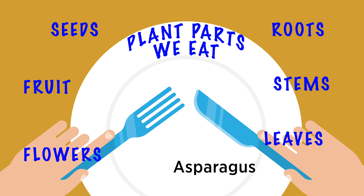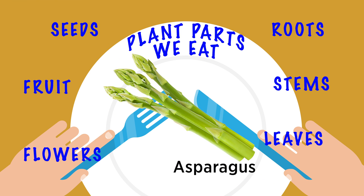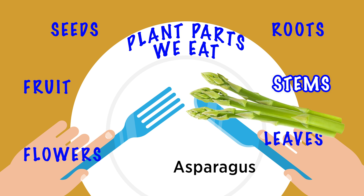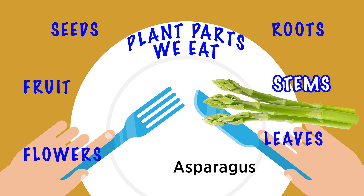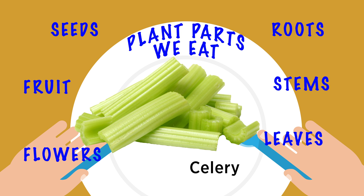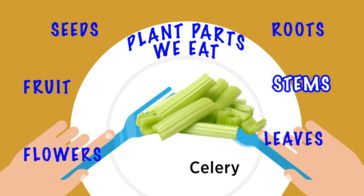Asparagus — when we eat asparagus, what do you think we're eating? We're eating the stems. Here's some celery — it's already been cut, but this is also a stem.